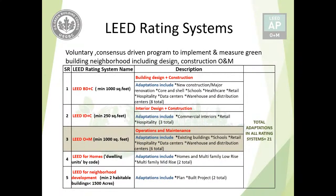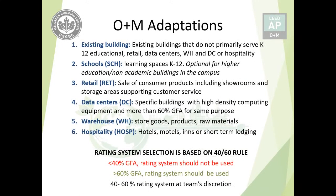In total, LEED Operations and Maintenance has only six adaptations. Existing buildings covers all buildings except the five specific ones: schools, retail, data centers, warehouses, and hospitality. Schools cover kindergarten to 12th grade and are optional for higher education. Retail covers the sale of consumer products. Data centers require more than 60% gross floor area for data center use. Warehouse is for storing goods, products, and raw materials. Hospitality includes all short-term lodging such as inns and hotels. The rating system selection follows the 60-40 rule: less than 40% — do not use that system; more than 60% — use it; between 40 and 60% — it's up to the project team.